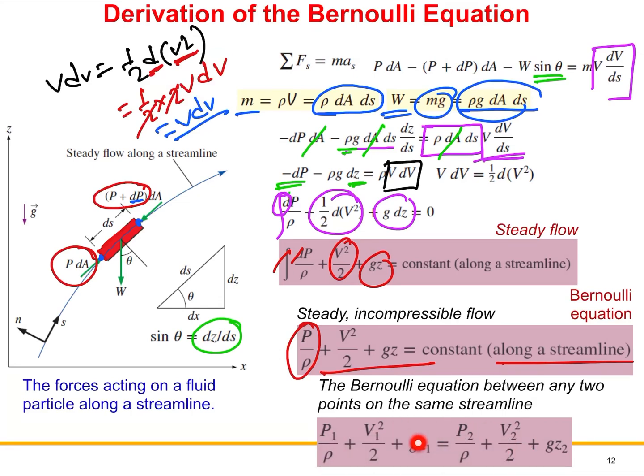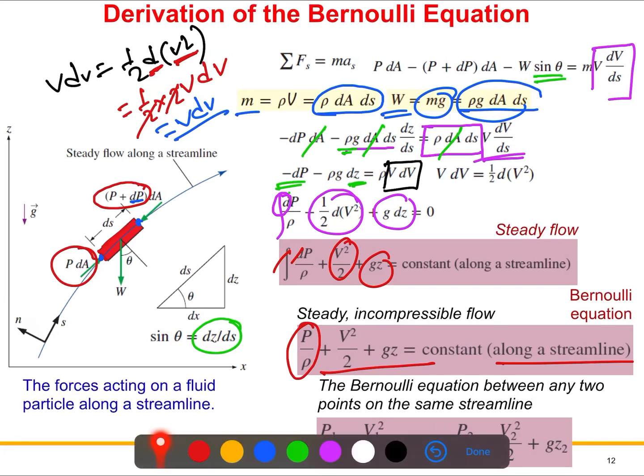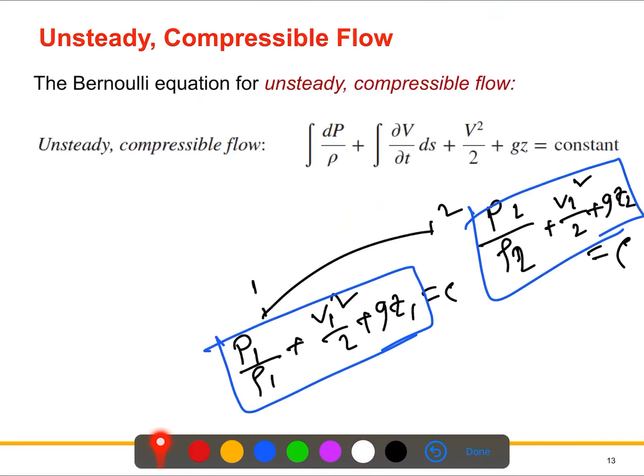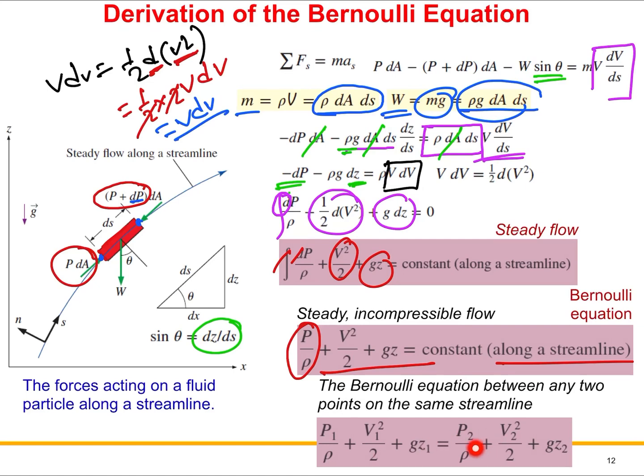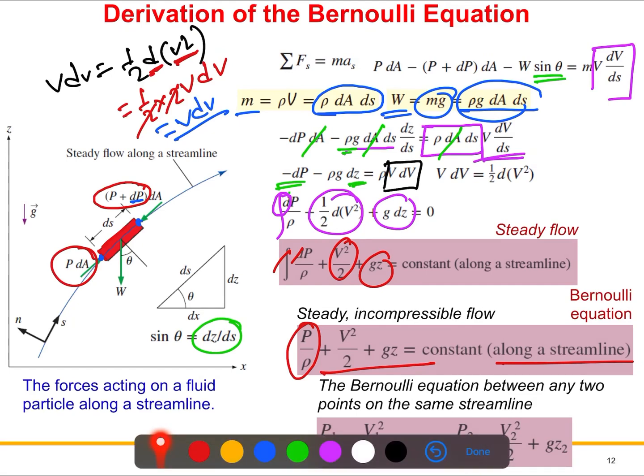So we will use these equations again and again when we will solve some problems. So that's the Bernoulli equations. And that's for the steady flow. For unsteady compressible flow, we have got this. You just keep in mind these expressions, we will not derive this. And this is not actually our common interest for this subject. So actually, we will use this one, the Bernoulli equations between any two points. So we have got some special cases, and I will discuss that during the lecture. So that's it.